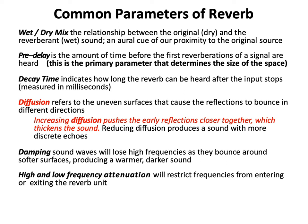Common parameters of reverb: Wet-dry mix is the relationship between the original dry and the reverberant wet sound — this is an aural cue of our proximity to the original source. More wet means we're farther from the source. If we're using reverb as an insert on a guitar track, wet-dry mix allows us to balance the direct guitar sound versus the reverberant sound. If we use a send and return model instead, we send the guitar on a bus to an aux channel with the reverb as a plugin, and the wet-dry mix is determined by the level of the aux fader.